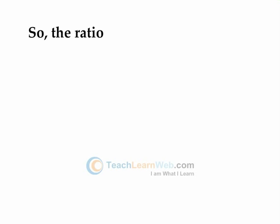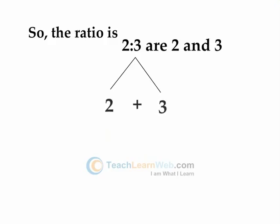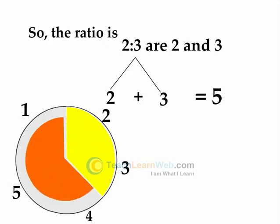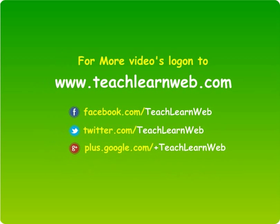The two terms of the ratio 2 is to 3 are 2 and 3. Sum of these terms is equal to 2 plus 3, which is equal to 5. This means if the profit is Rs. 5, then one friend should get Rs. 2 and the other should get Rs. 3. Or we can say that one friend gets 2 parts and the other gets 3 parts out of the 5 parts.